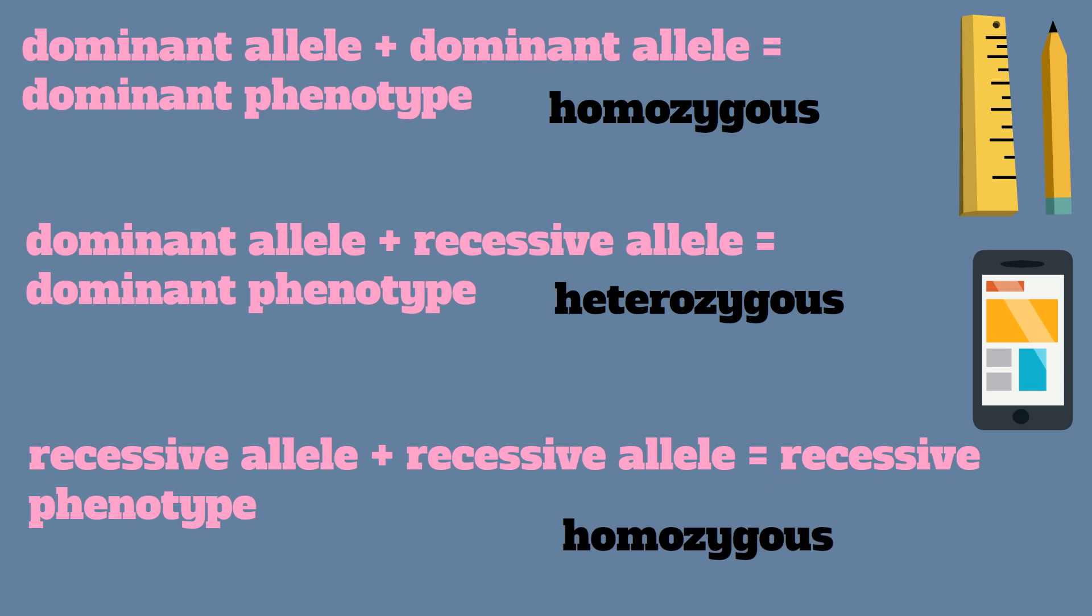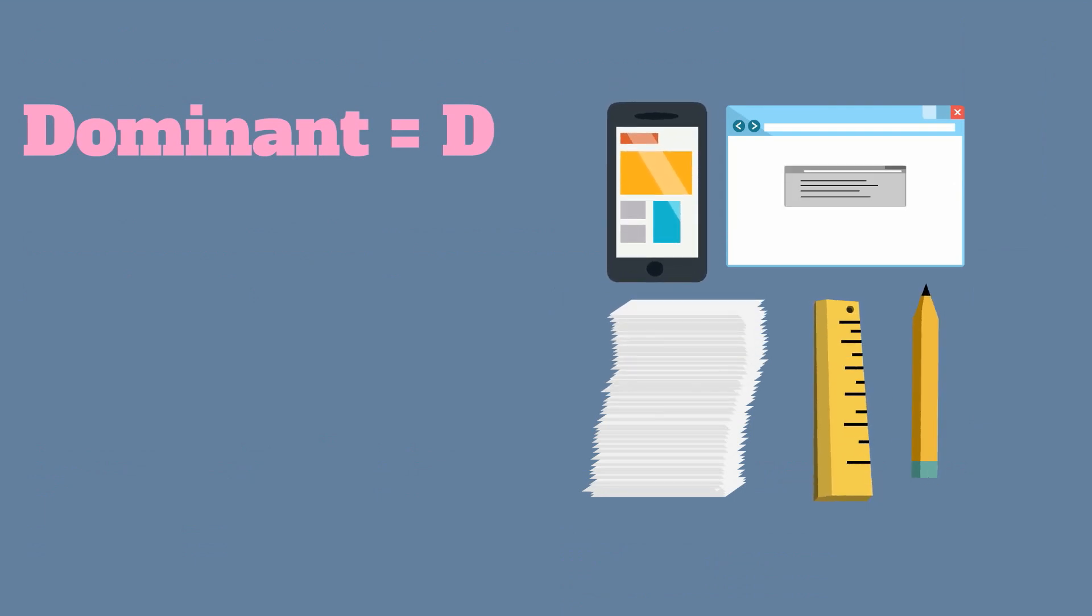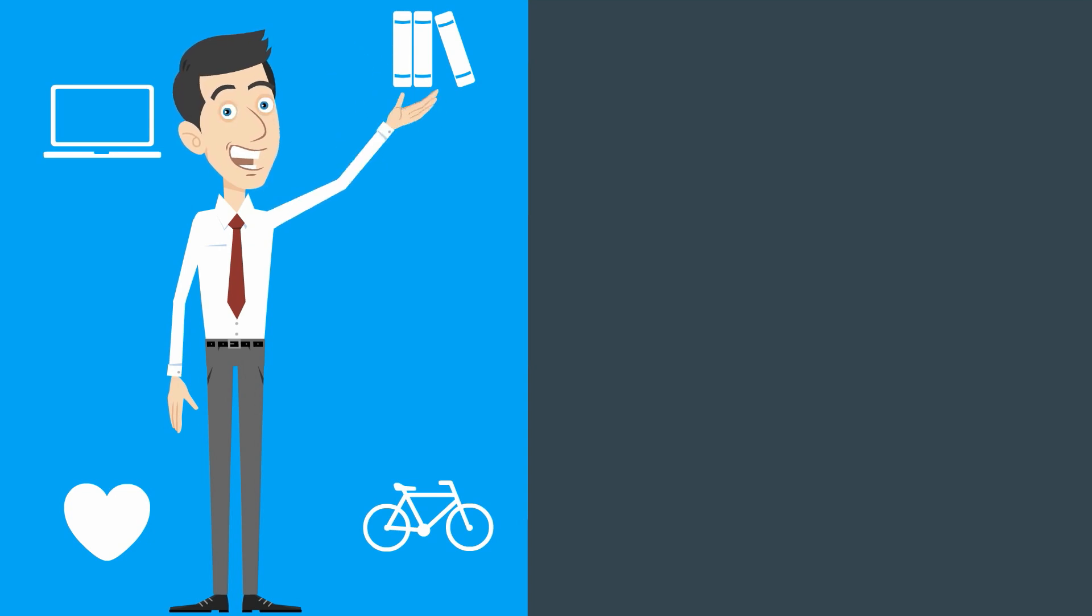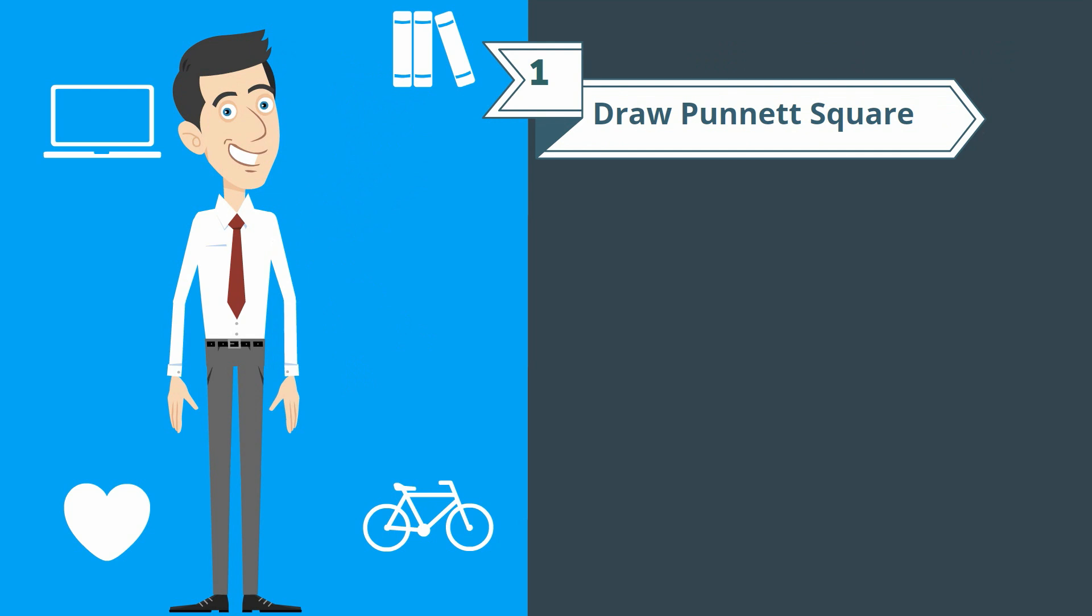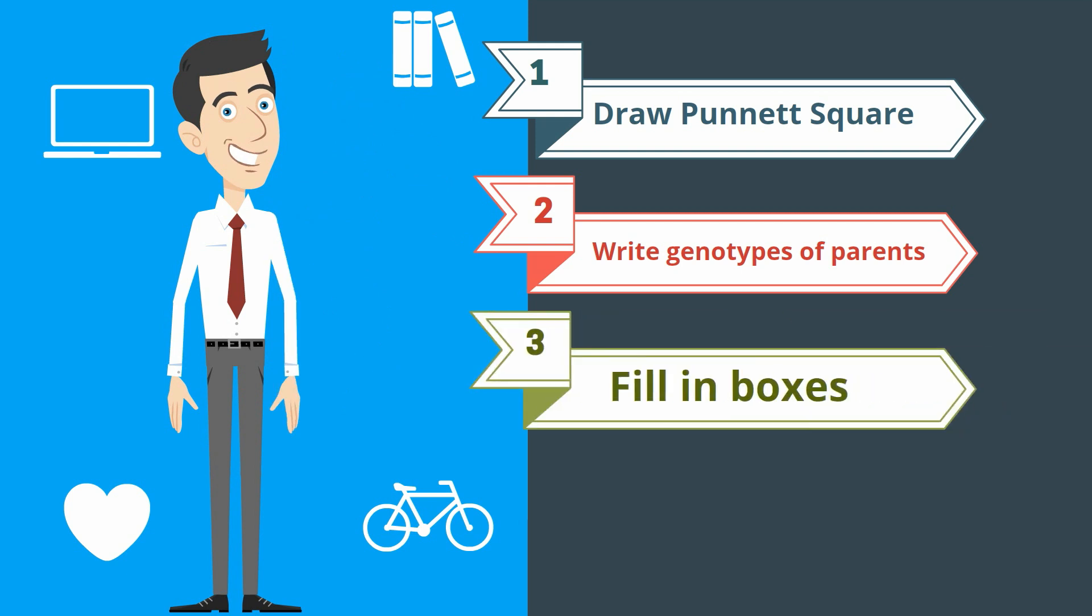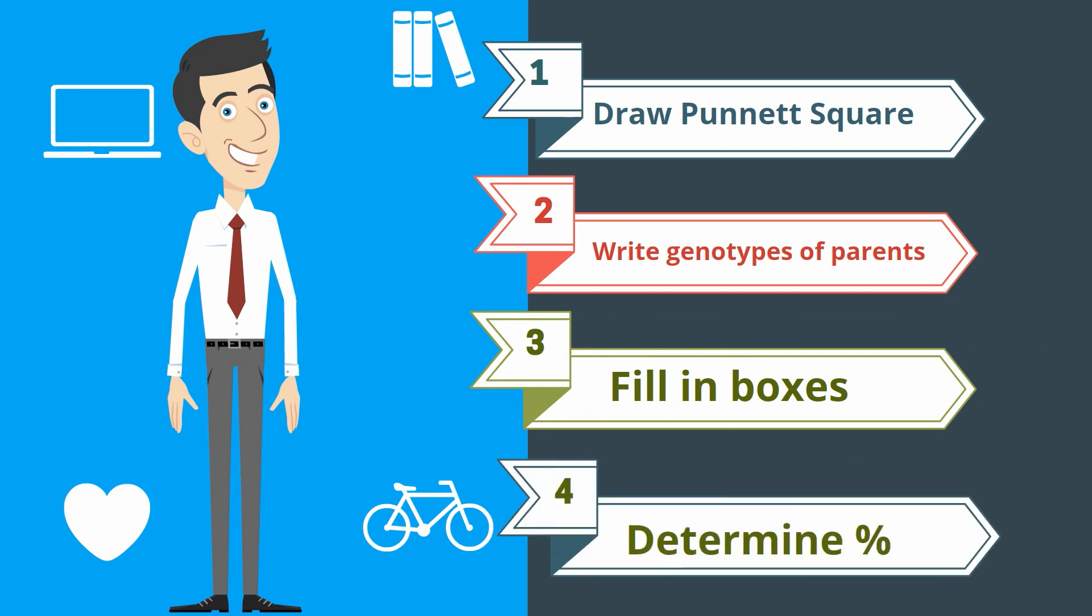A dominant trait is always written with a capital letter. A recessive trait is written with a lowercase letter. The steps for setting up a Punnett square are as follows: draw the Punnett square box, write the genotype of the parents on the top and on the sides of the Punnett square, fill in the boxes, and then determine the percentages of the phenotypes.